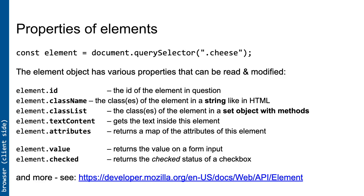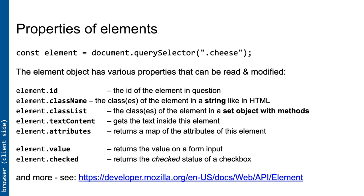If we wanted to create an element and set some properties: we have a paragraph that we've created using document.createElement, writing 'p' in the quotes because that's the HTML tag we want — minus the angle brackets. We can set its textContent to 'Hello World' and give it an id of 'hw' if we want.